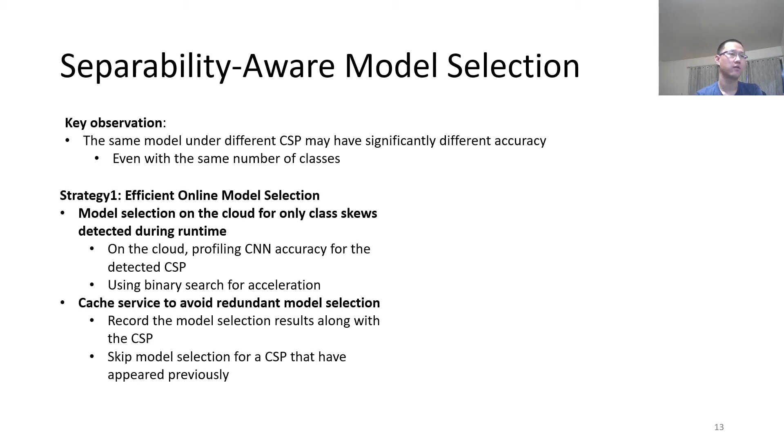Actually, we record the model selection results along with the class skew profile. This skips the model selection for a class skew profile that have appeared previously.